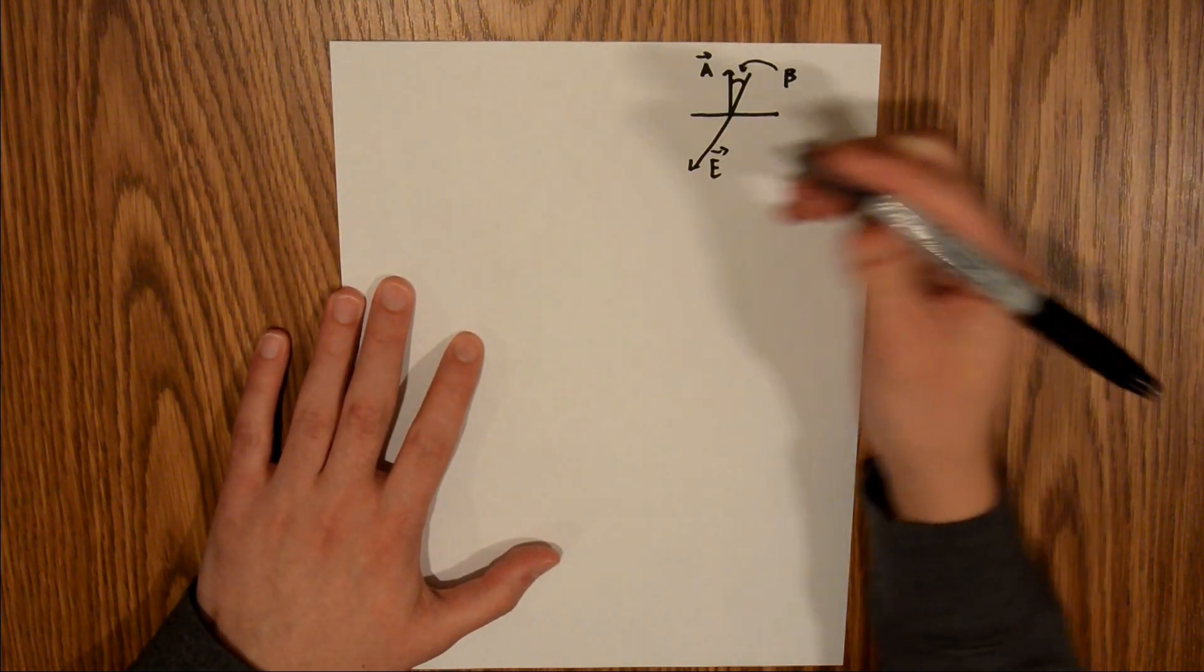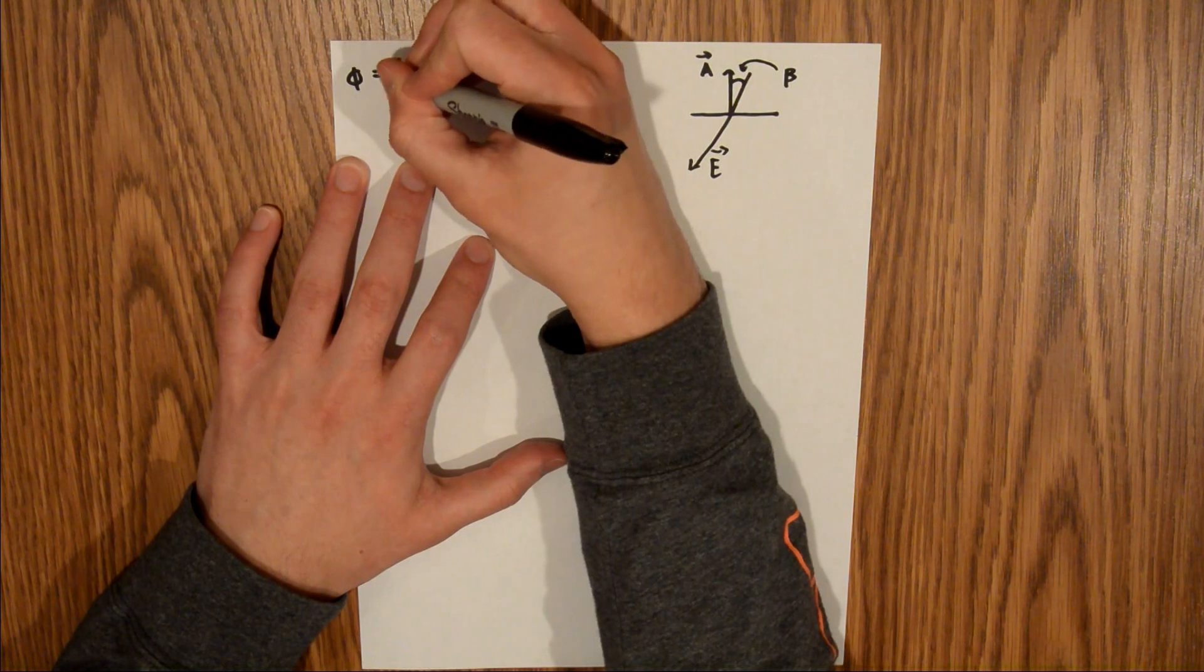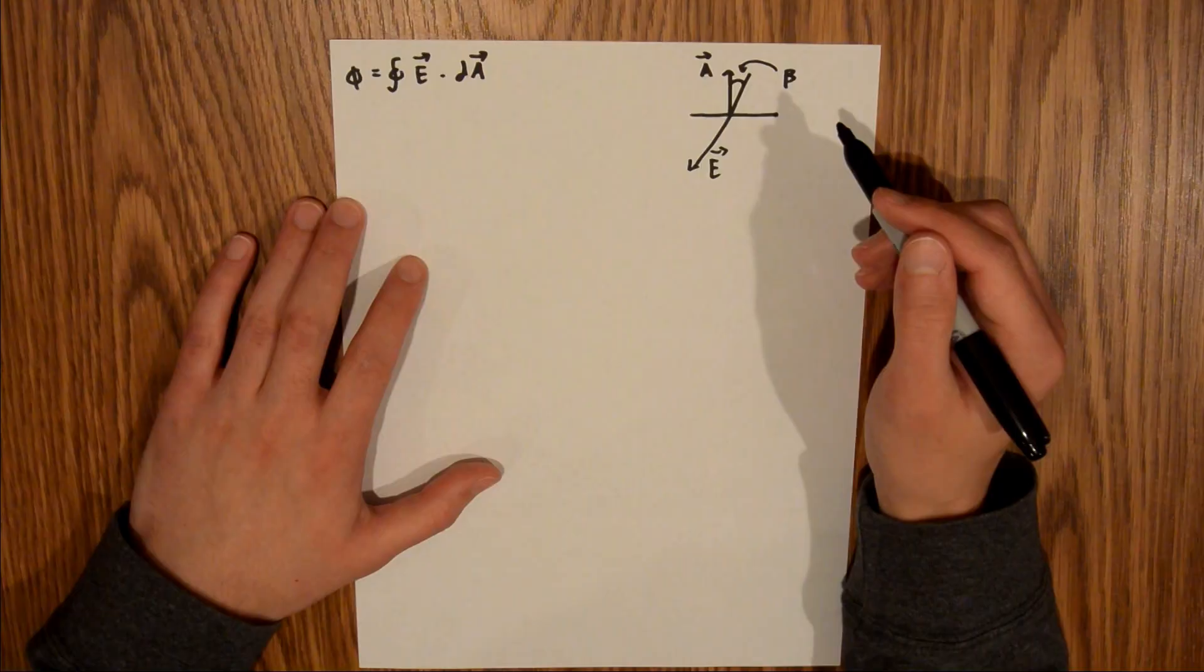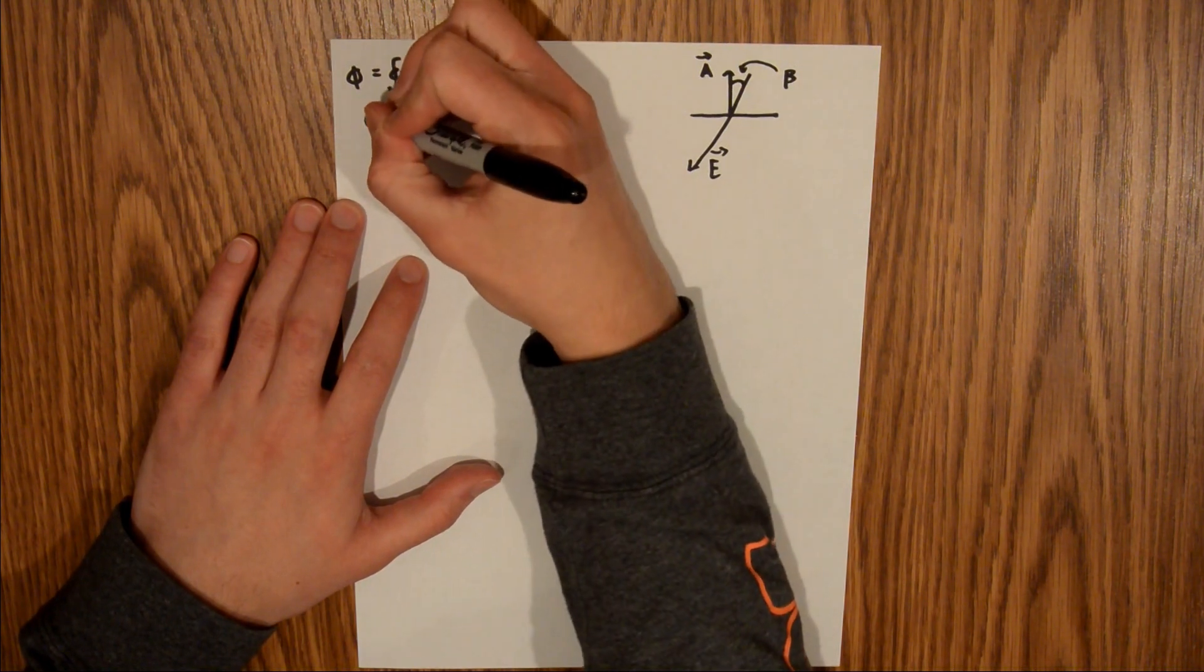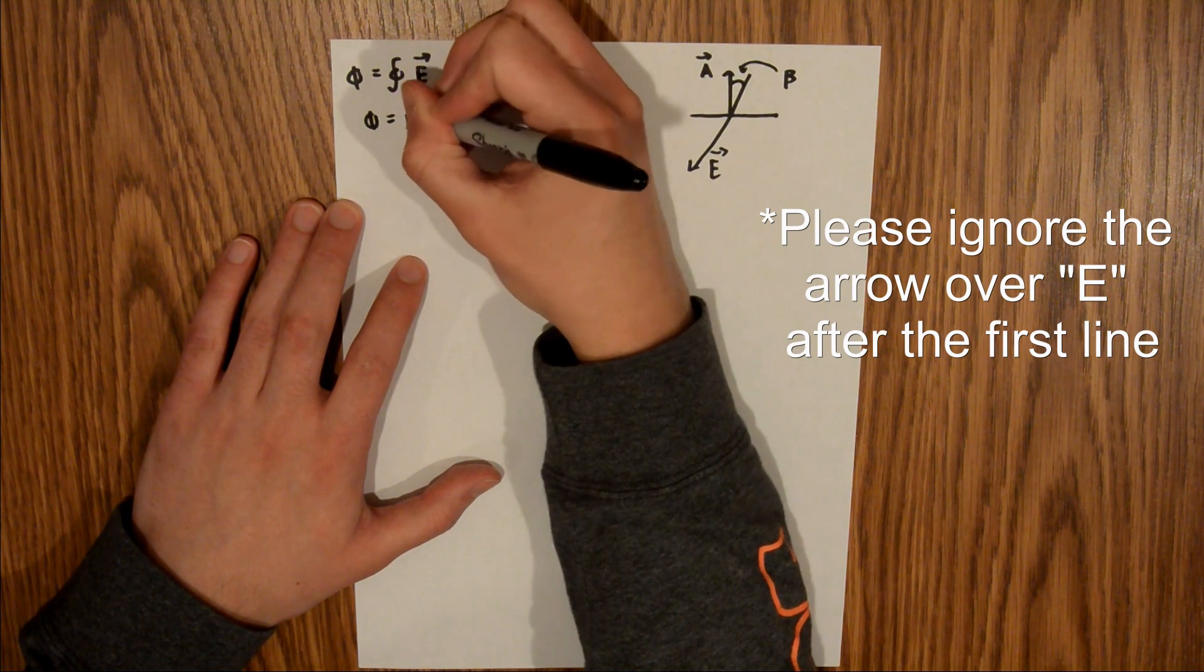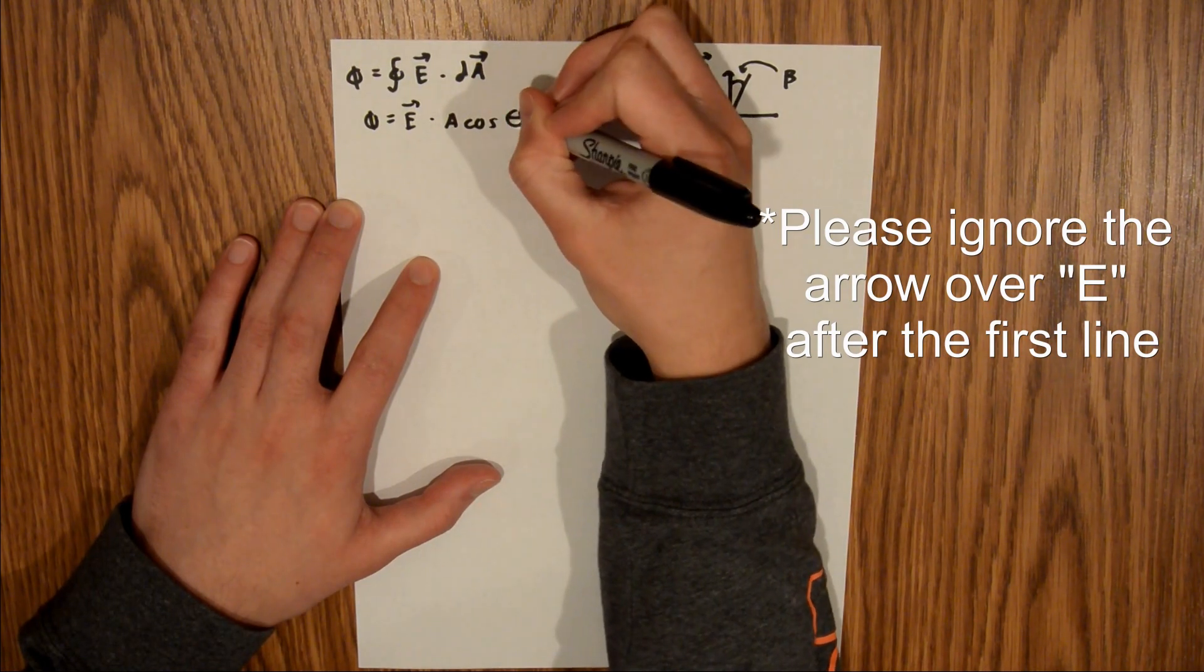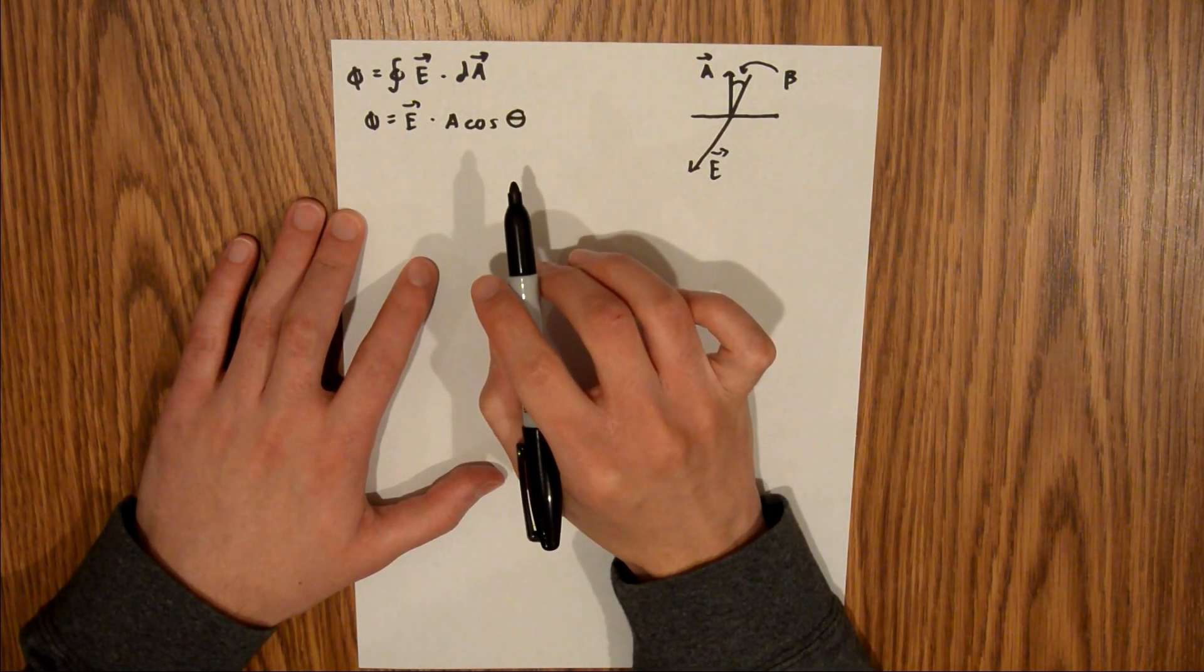That's the setup for this problem. We know that flux is equal to the integral of the electric field dotted with the differential area. But since we have a planar surface, we can simplify this, and it becomes flux equals the electric field times area cosine theta. This is the component of the area that is perpendicular to the electric field.